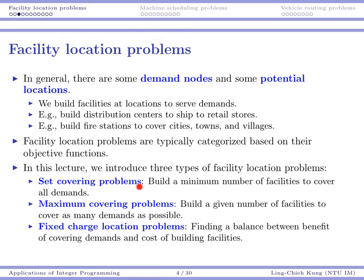The first type is called the set covering problem. We want to build as few facilities as possible to cover all demands. The second type is the maximum covering problem: you have a limited number of facilities to build and want to cover as many demands as possible. The third type is the fixed charge location problem, where we are not limited in number of facilities and not required to cover everything, but seek a balance between the benefit of covering demands and the cost of building facilities.